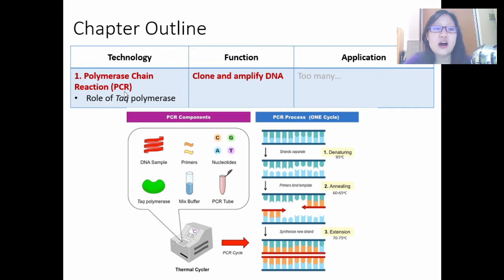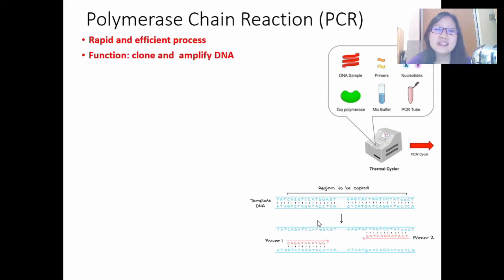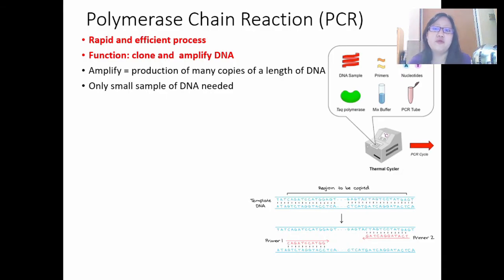Polymerase chain reaction, or PCR, is used to clone and amplify DNA. We have a particular focus here on Taq polymerase, which you will find out what it does later. You need to know all the components used in PCR, as well as three different stages of the process including the temperatures. PCR is to clone and amplify DNA — amplifying DNA means to produce many copies of a length of DNA. It is very rapid and very efficient. You can use a very small sample of DNA to start out with, and PCR makes a lot of copies of that DNA in a relatively short time frame.